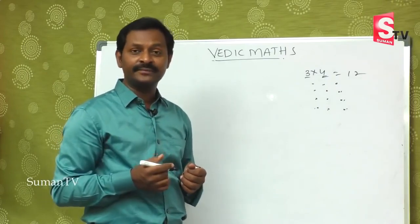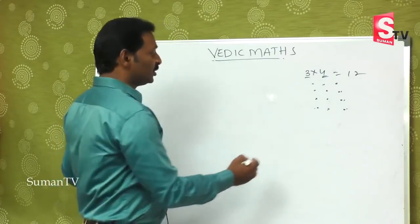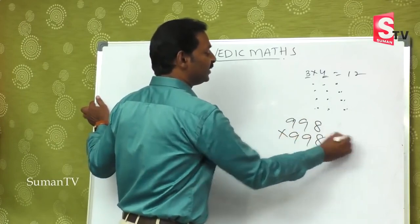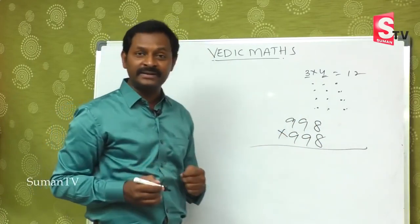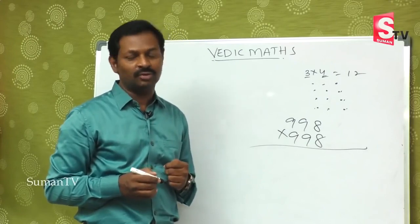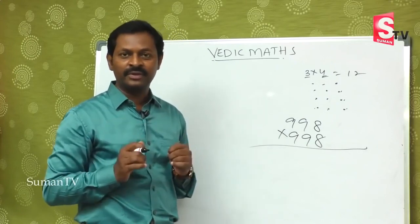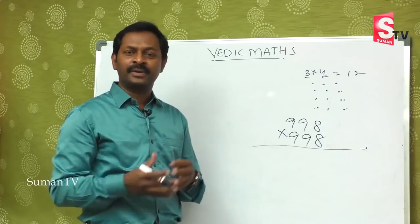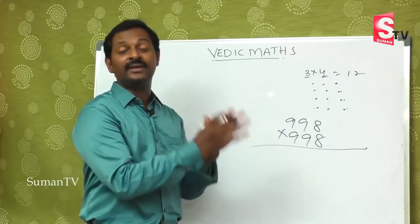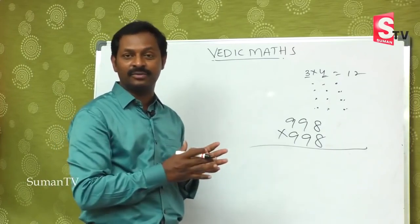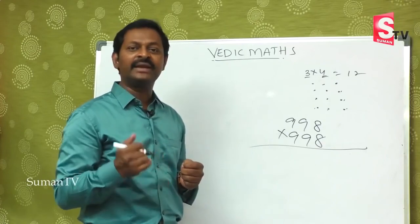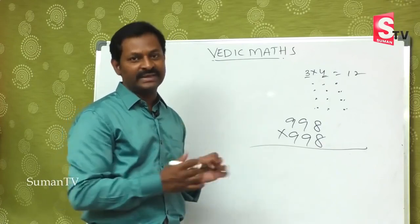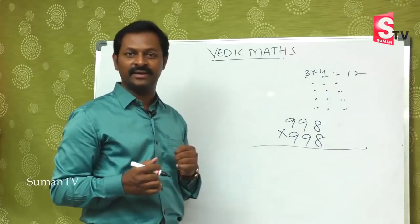But for bigger numbers — suppose 998 is multiplied by 998 — is it possible to do by tables? No, this is not at all possible. So we have to calculate using some special methods. Today we will discuss about these things in our classroom.